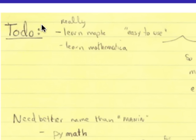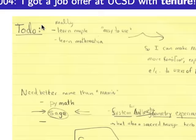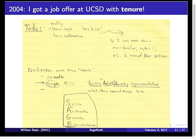I contacted some other places that had expressed interest in me and told them this. Some places said they had no further interest in me, that there was no possibility they'd consider hiring me with tenure. But UCSD was also interested, and they made an offer with tenure as well, and I took it. And I suddenly thought: I could maybe write an open source system to replace Magma — everything else I use is open source, so why not?